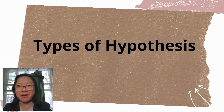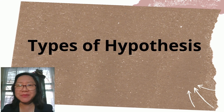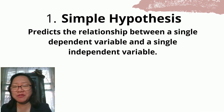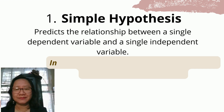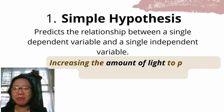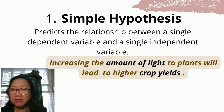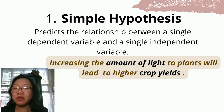Now let's study the different types of hypotheses. The first type is simple hypothesis, which predicts the relationship between a single dependent variable and a single independent variable. Example: increasing the amount of light to plants will lead to higher crop yields. Crop yield is the single dependent variable, and amount of light is the single independent variable.